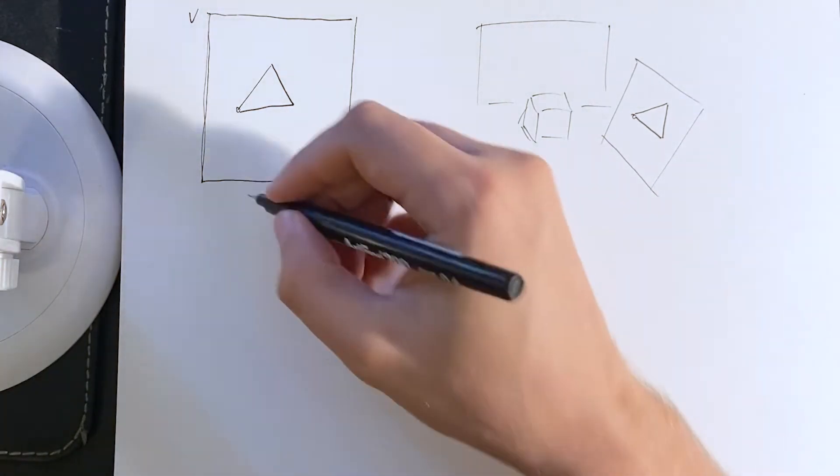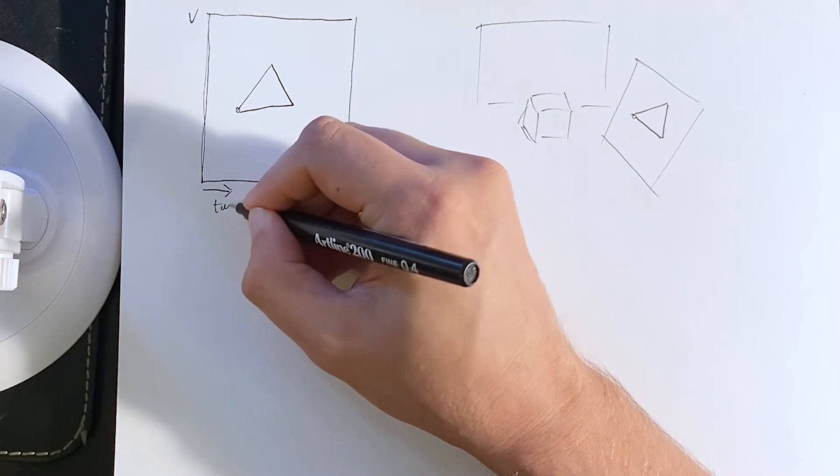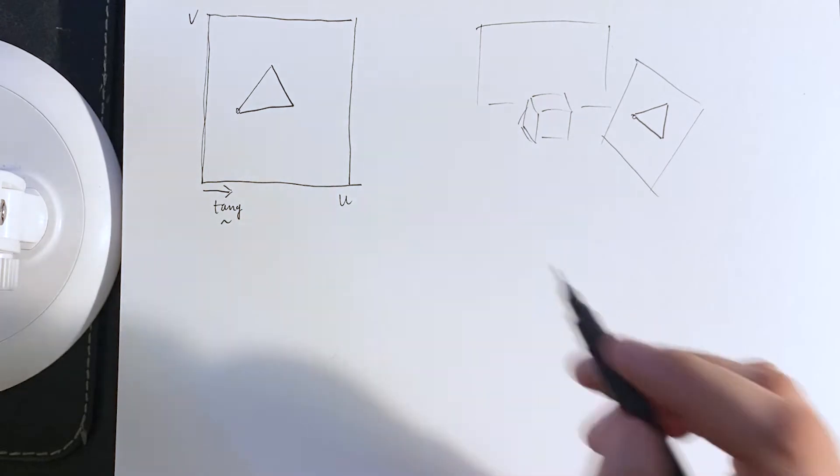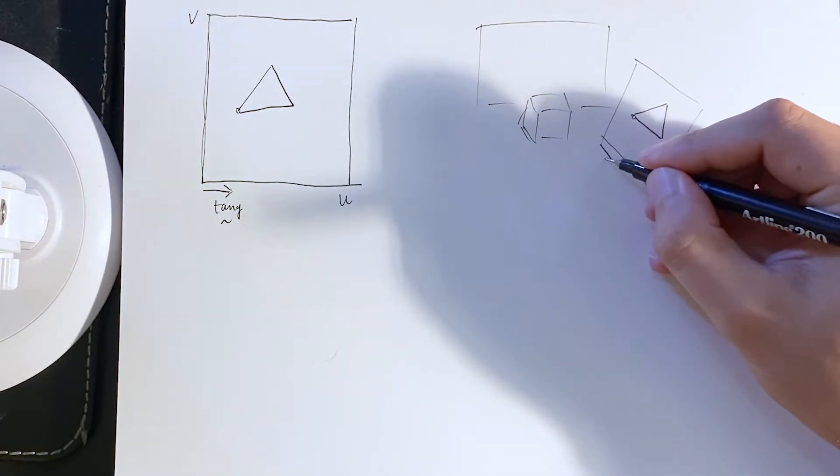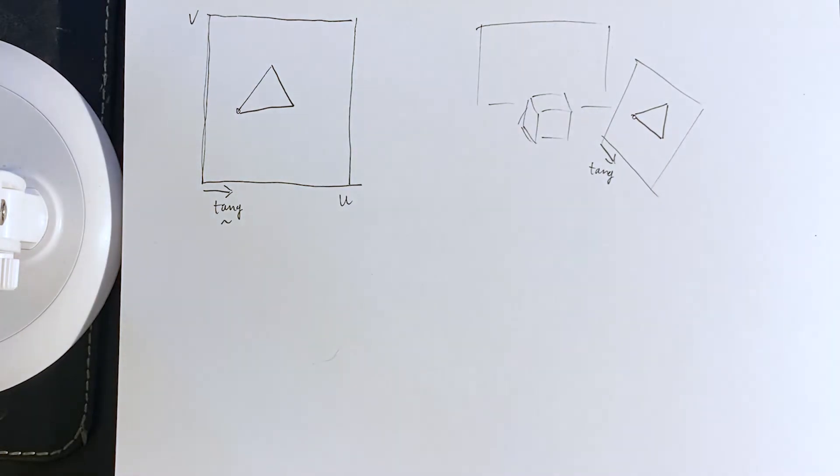In other words, what do we have here? We have a tangent vector, which is along the U. We want to know what direction is that tangent vector in model space.